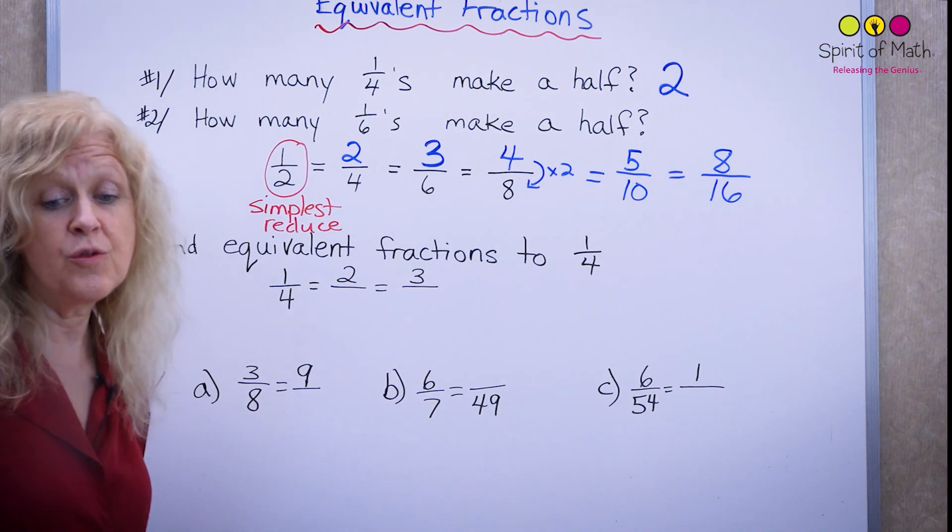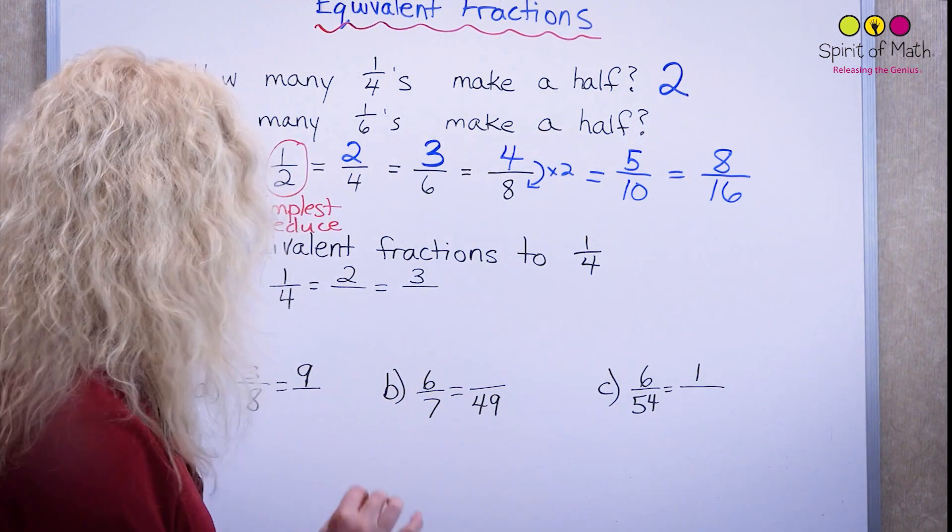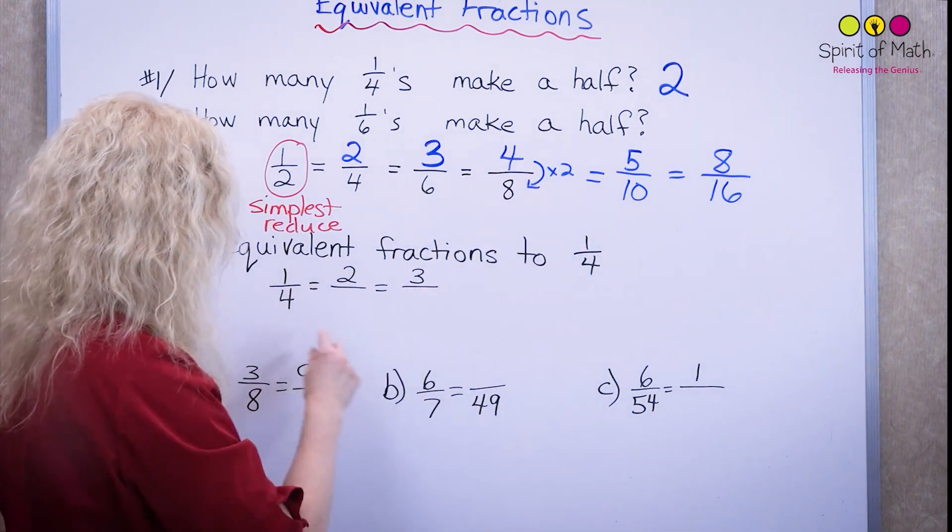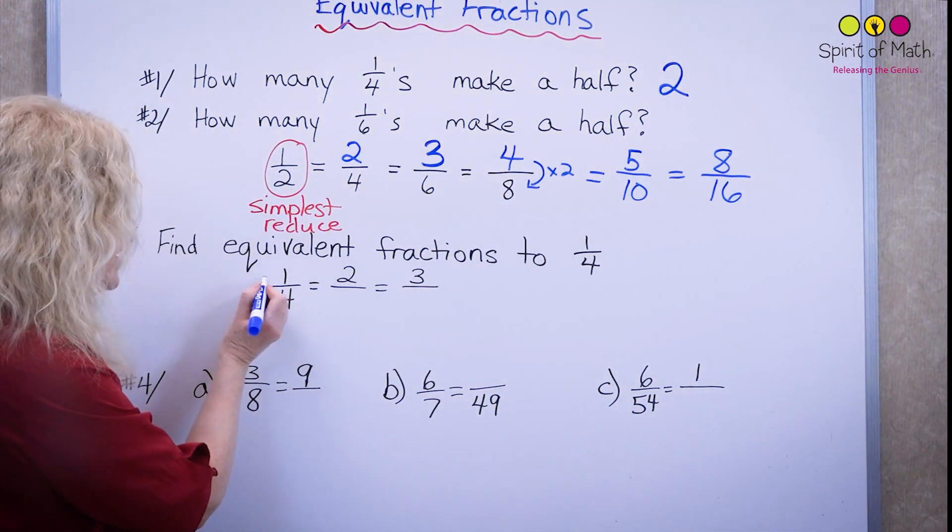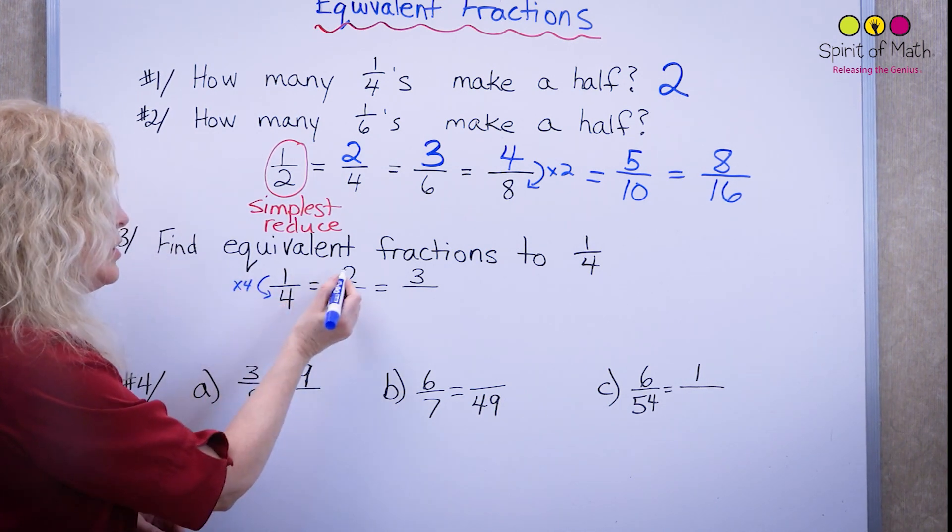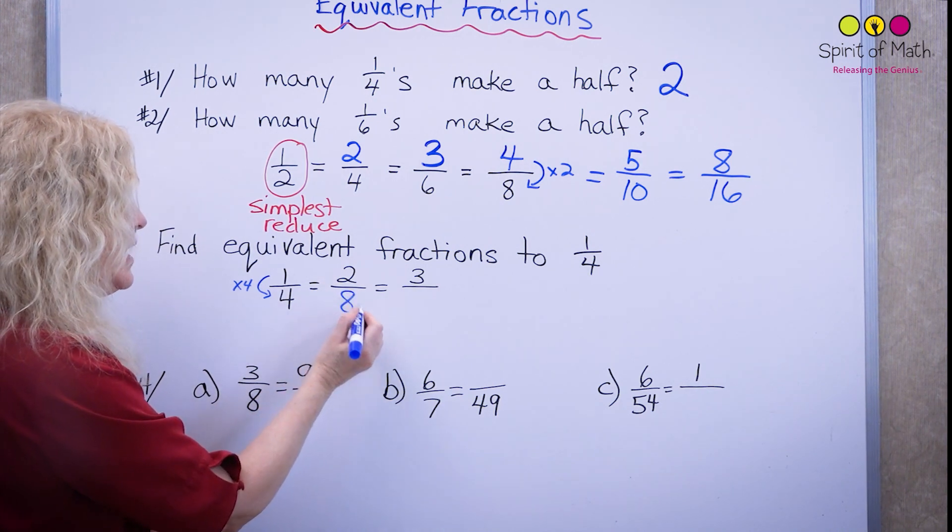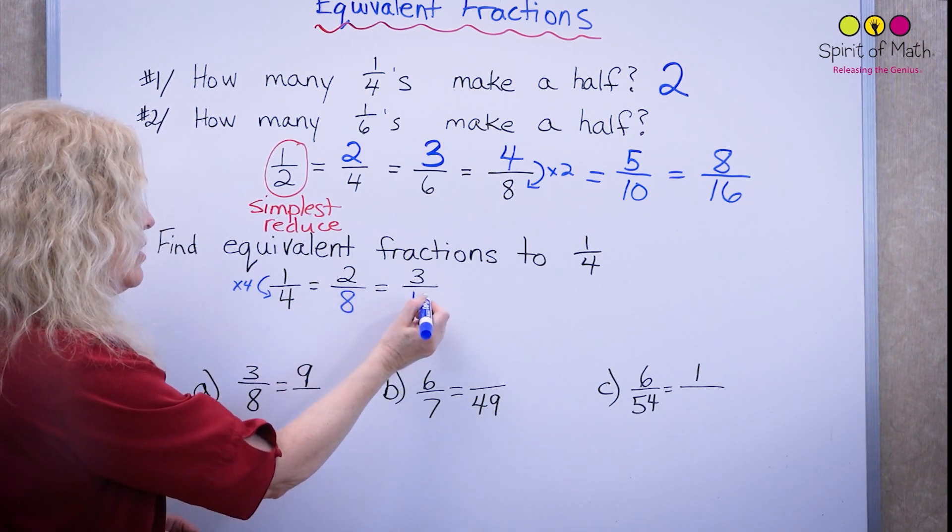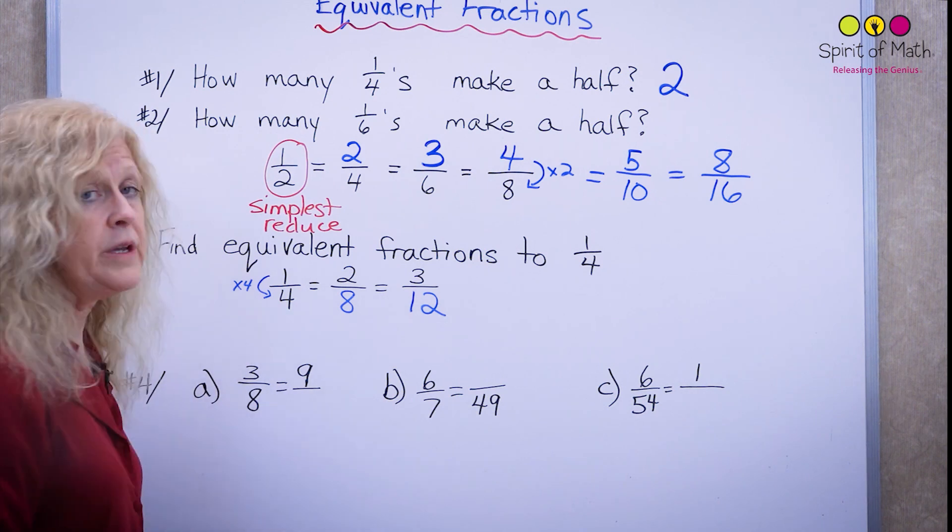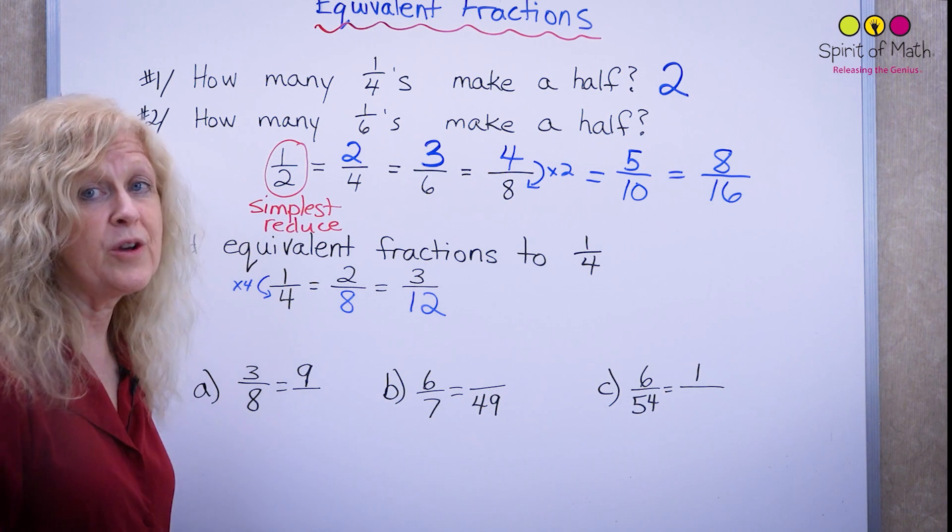Now let's do the same for this one. Find equivalent fractions to one-quarter now. So let's think the same way. Here, we have to multiply by two. So this time, because it's one times four equals four, you would do the same here. So two times four would be eight. Three times four would be twelve. Three-twelfths is equivalent to one-quarter. Two-eighths is equivalent to one-quarter.